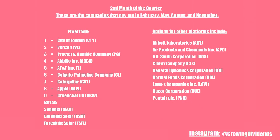For the second month of the quarter, these are the companies that pay out in February, May, August and November. There is City of London, Verizon, Procter & Gamble, AbbVie, AT&T, Colgate Palmolive, Caterpillar, Apple, Greencoat UK, Sequoia, Bluefield Solar and Foresight Solar.